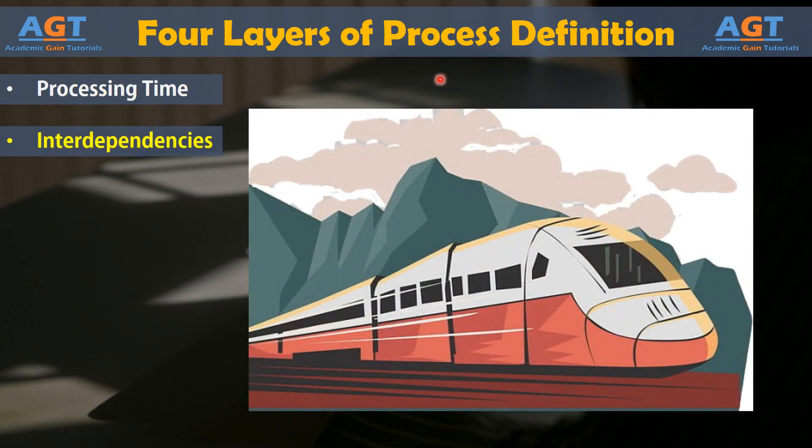Interdependencies: Almost any process in a business will be dependent upon one or more other processes. Remember, the business itself is a series of linked processes all working toward the same goal or goals. Sometimes interdependencies are noted on process maps; other times, interdependencies are resource-related. For example, consider a very simple passenger train scenario.